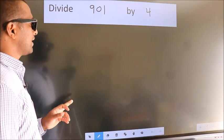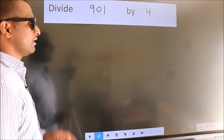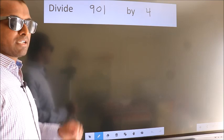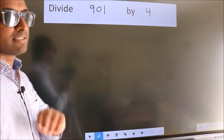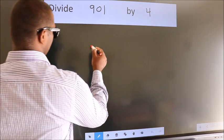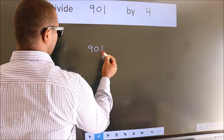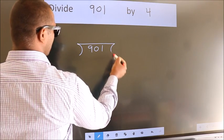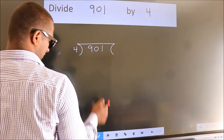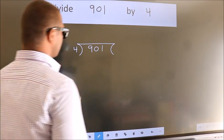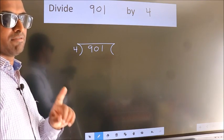Divide 901 by 4. To do this division we should frame it in this way. 901 here, 4 here. This is your step 1.